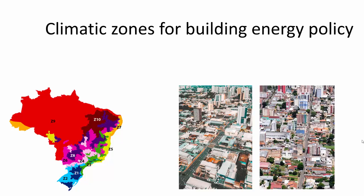Climatic zoning for building energy policy is an important tool because it supports legislation regarding building components and requirements for the building industry. In the case of Brazil, you have pictures taken in Manaus, in the middle of the Amazon forest, and in the southern part of Brazil close to Uruguay and Argentina. It's hard to distinguish the two. The construction industry was organized so that the same techniques, building shape, and design are used all over the territory because there is no effective energy policy for buildings in Brazil. Having a robust climate zoning can support this sort of policy.